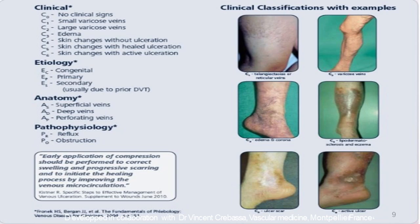Etiology can be congenital, as we talked earlier, primary, or secondary. The anatomy always involves the superficial veins. In deep vein disease, the disease will be transmitted to the superficial veins through the perforators. The pathophysiology is either due to reflux or obstruction — in either way, there is increased venous pressure in the deep system.